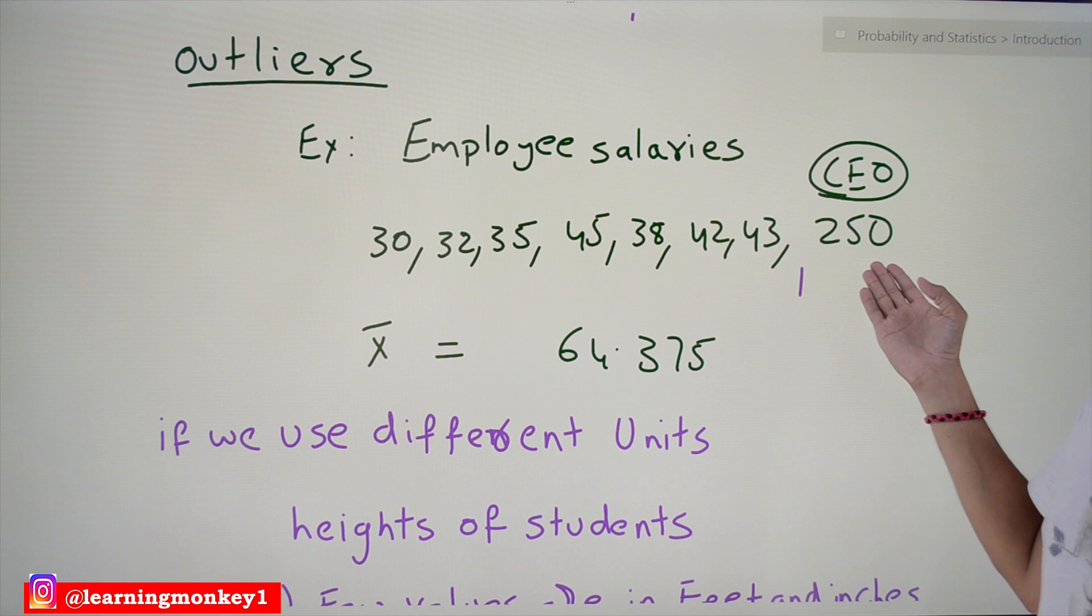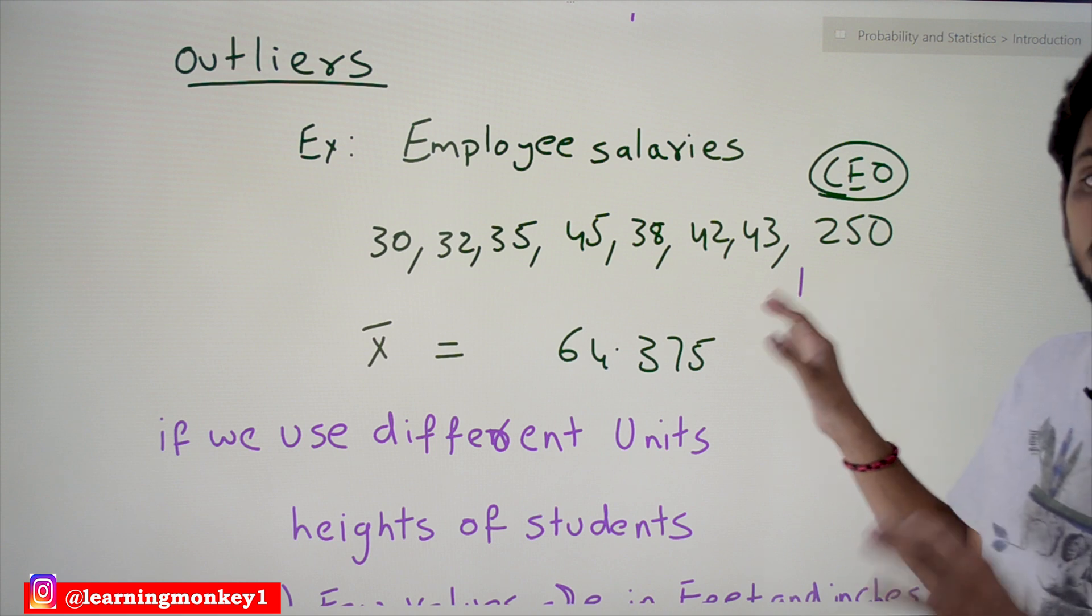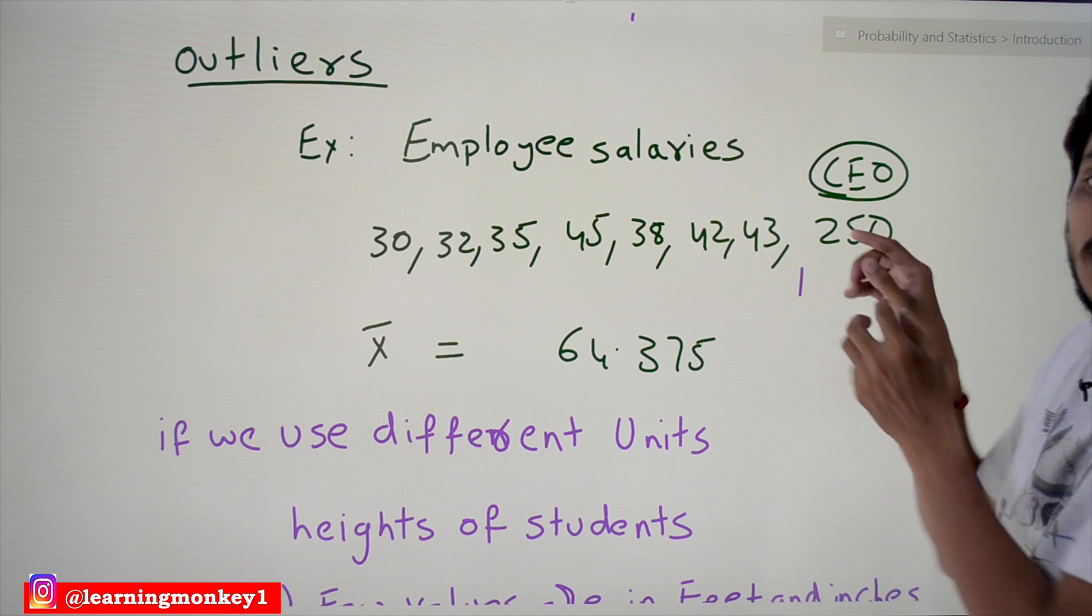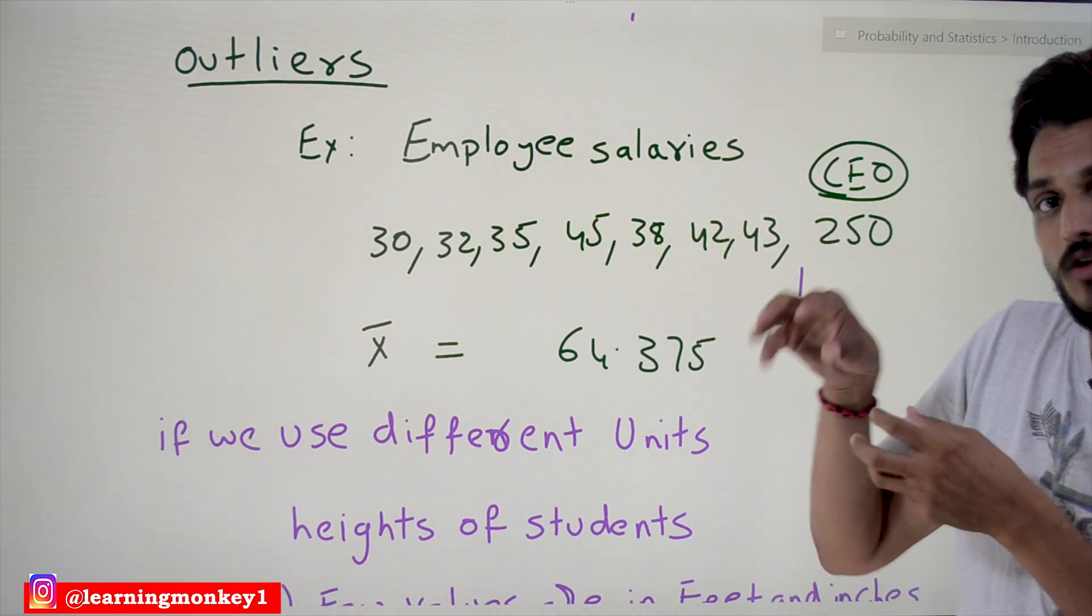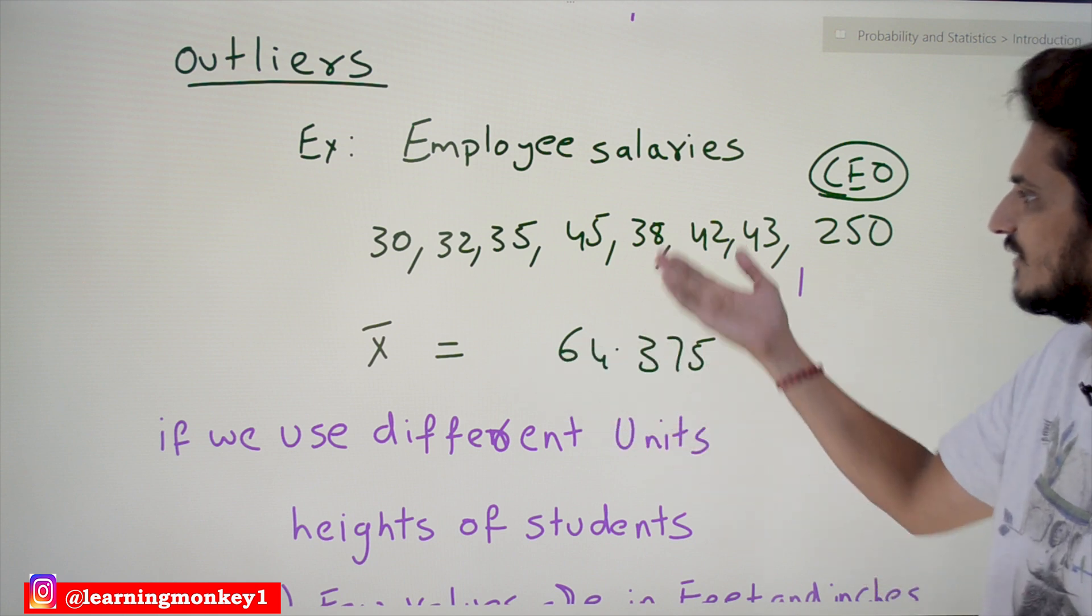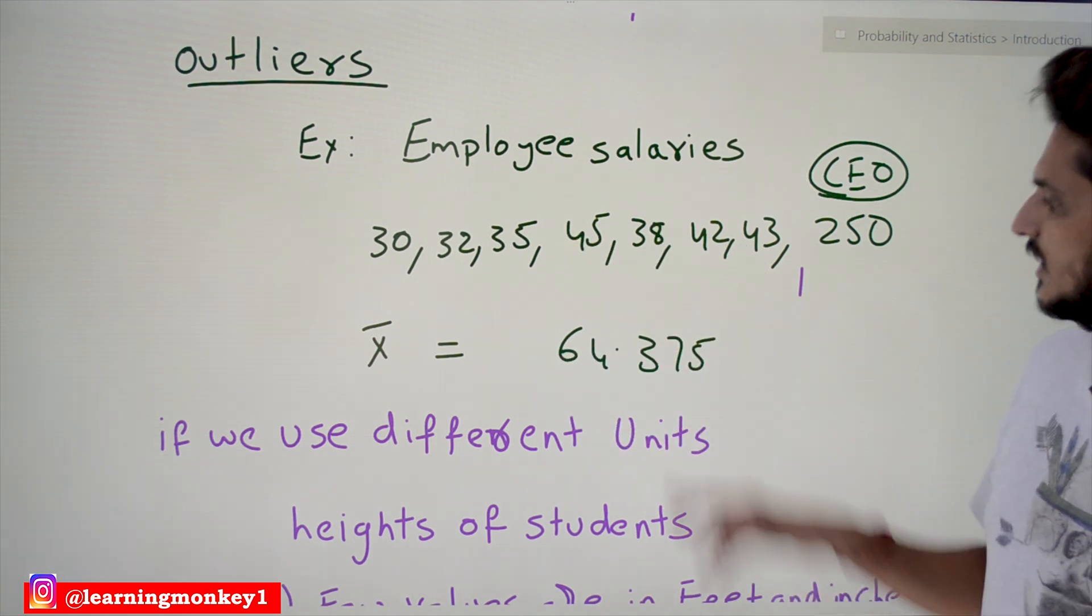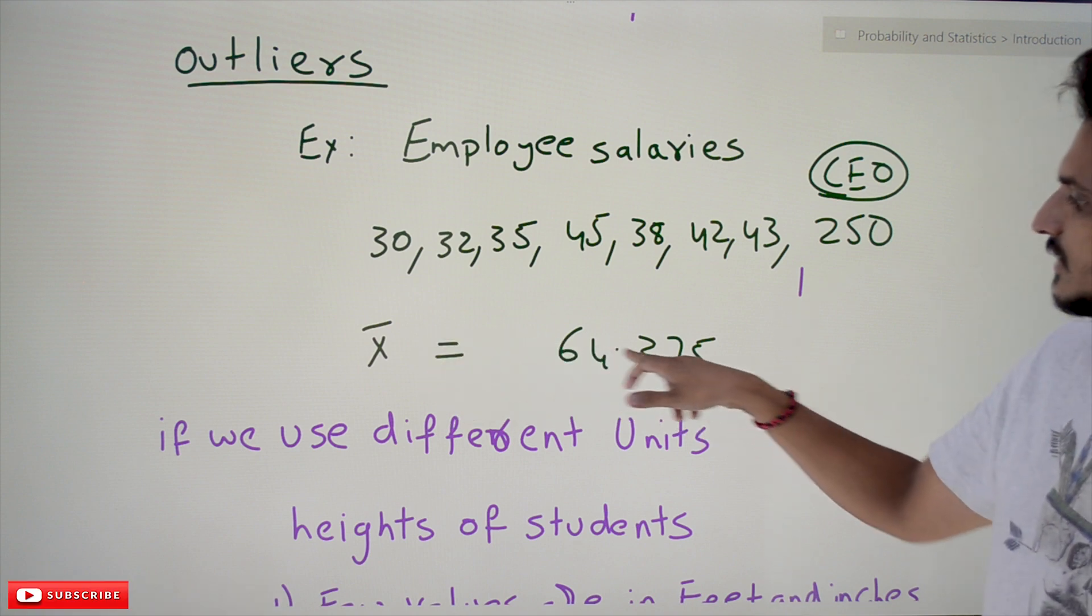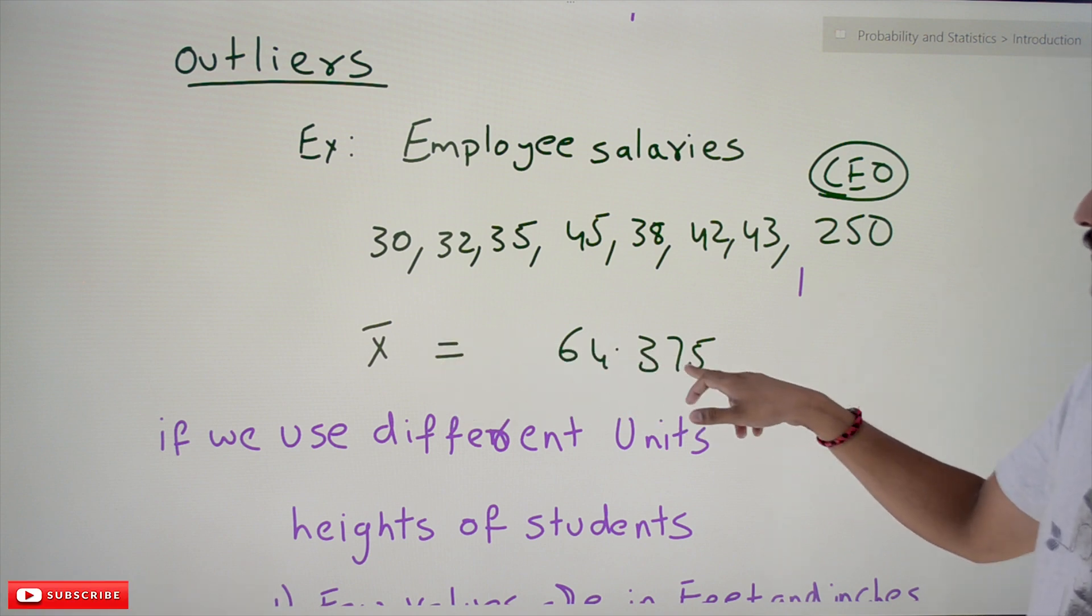In this type of situation, this big value will affect the mean. It will always try to pull the mean value towards the big value because we are doing addition and dividing by number of values. That's why our mean value, we got it as 64.375. It's somewhere around here.